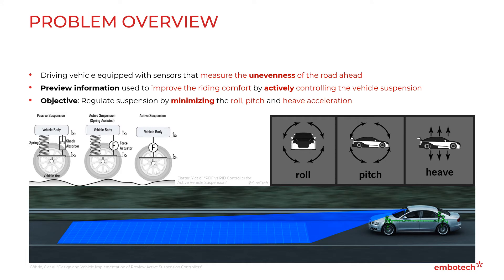We will achieve these comfort requirements by regulating suspension such that the roll, pitch, and heave acceleration of the vehicle are minimized. Note that roll is the rotation of a vehicle about the longitudinal axis, pitch is the rotation of a vehicle about the transverse axis, and heave is the vehicle's vertical motion.